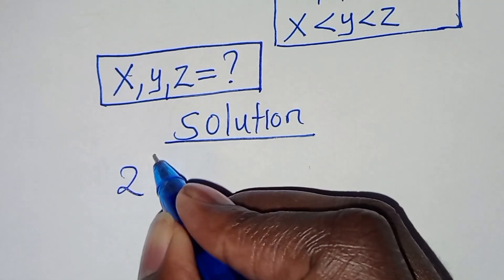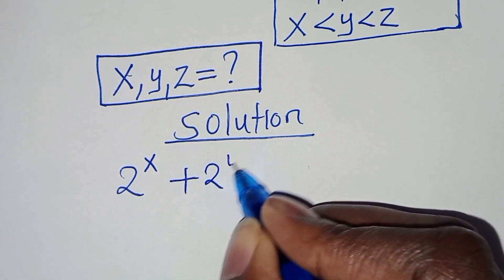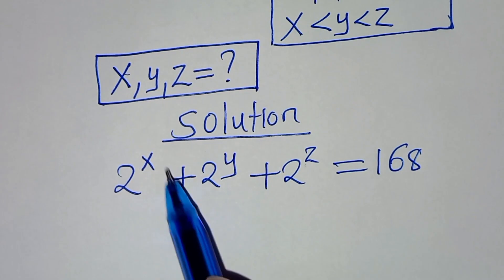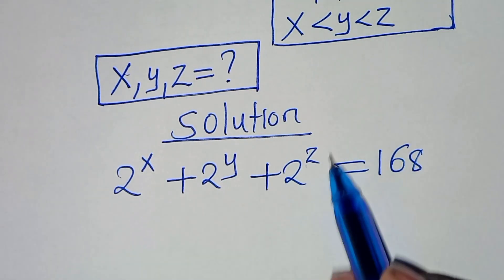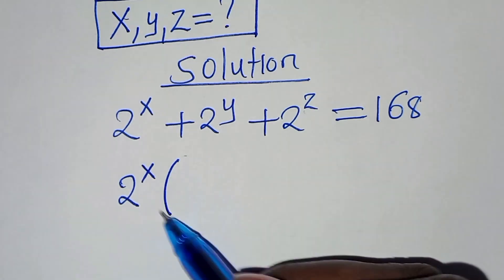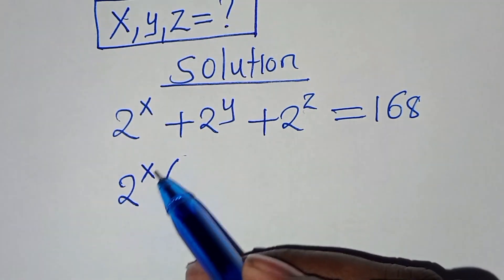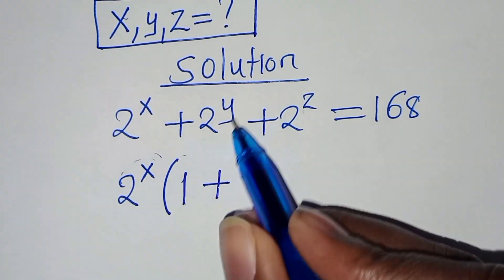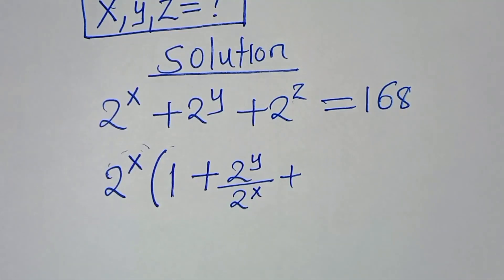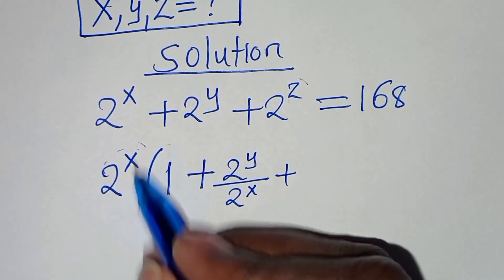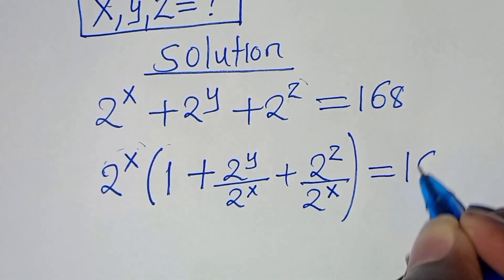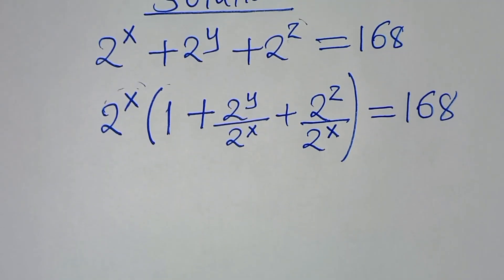From our equation, 2 to the power of x plus 2 to the power of y plus 2 to the power of z equals 168, and x is less than y, which is less than z. This implies we can factor out 2 to the power of x, giving us 2^x times the quantity: 2^x divided by 2^x, which is 1, plus 2^y divided by 2^x, plus 2^z divided by 2^x — all equal to 168.